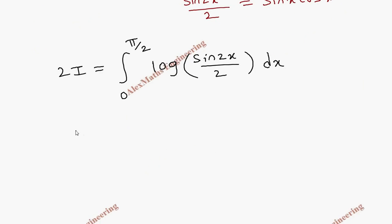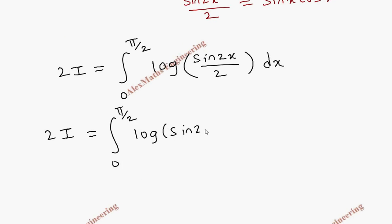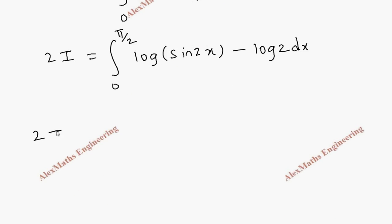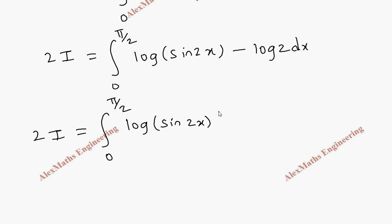Now we are going to use the log rule again: log(a/b) equals log a minus log b. So log(sin 2x / 2) becomes log sin 2x minus log 2. Let's split this into two integrals. So 2I equals integral 0 to pi by 2 of log sin 2x dx minus integral 0 to pi by 2 of log 2 dx.